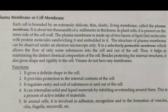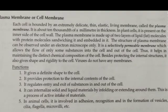Each cell is bounded by an extremely delicate, thin, elastic, living membrane called the plasma membrane. It is very thin and is known as the semi-permeable or selectively permeable membrane. It is called selectively permeable because it allows the flow of only some substances into and out of the cell.